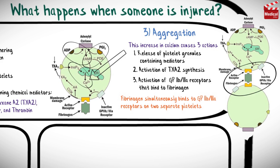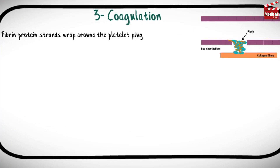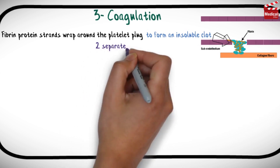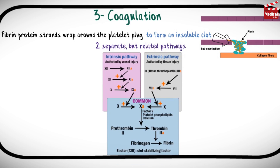This process continues until forming the platelet plug. Then comes the third step: blood coagulation. Blood coagulation is the process in which fibrin protein strands wrap around the platelet plug to form an insoluble clot. The process occurs through two separate but related pathways called the intrinsic and the extrinsic coagulation pathways.